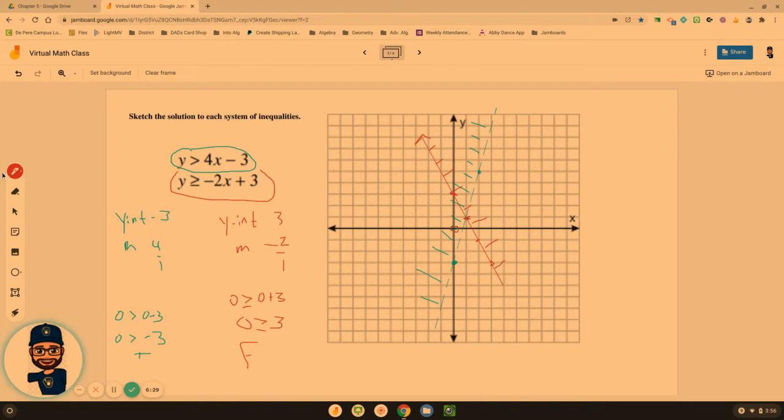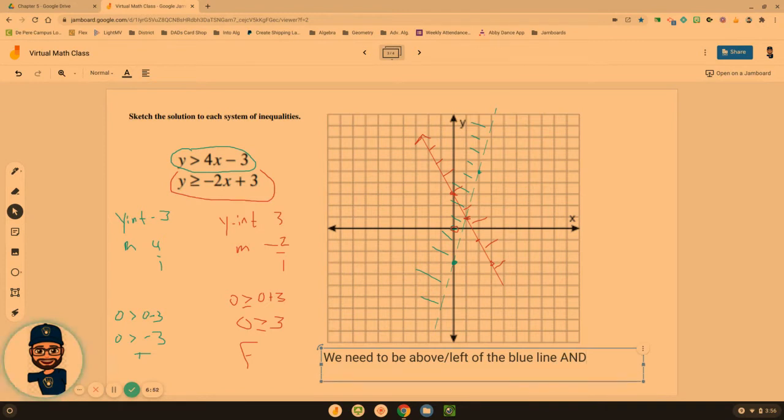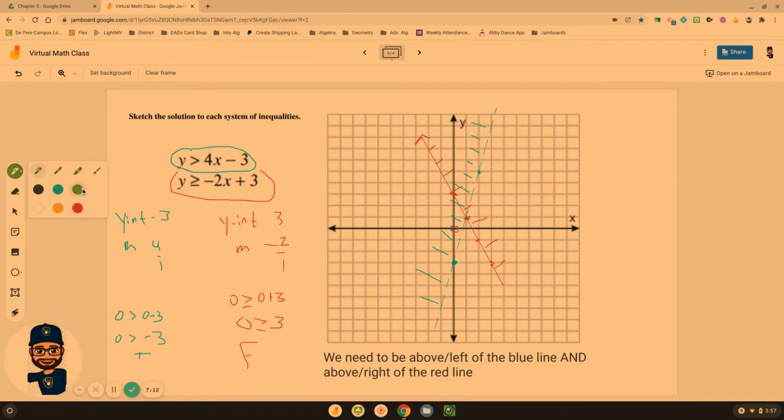So what this looks like, or maybe what this is saying. Maybe if I type this out, it'll be easier to see what we're looking for. The blue line, we need to be above. Maybe you're looking at it as left of the blue line. And it has to satisfy both. So we need to be above, or maybe some of you see that as to the right of the red line. Above, or left of the blue line, and at the same time, it's got to be above, or to the right of the red.